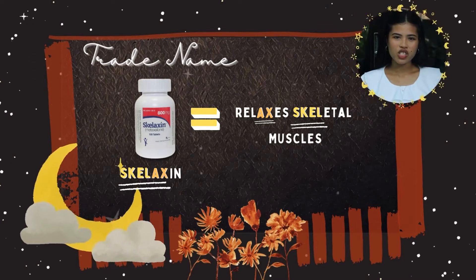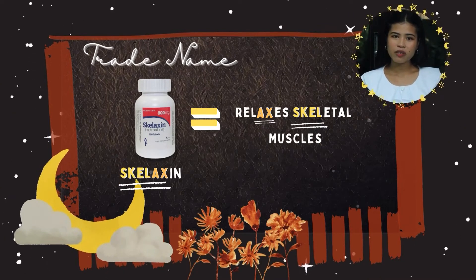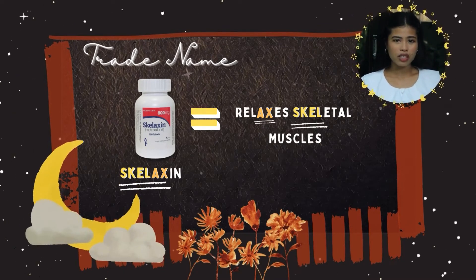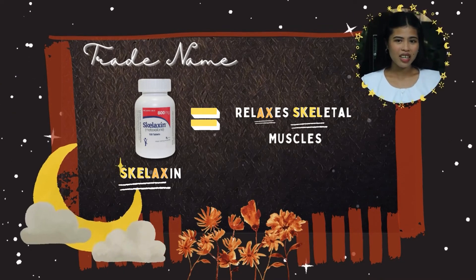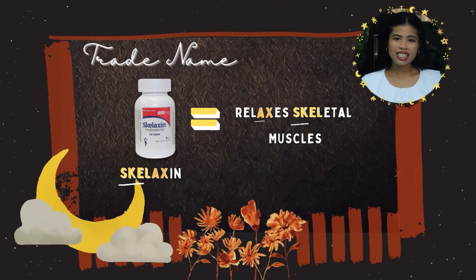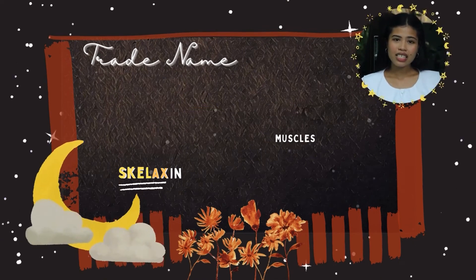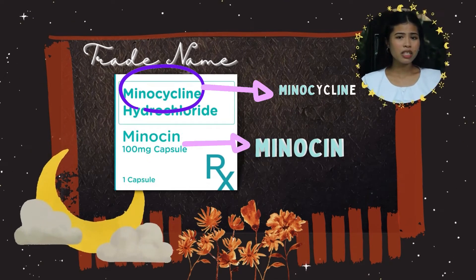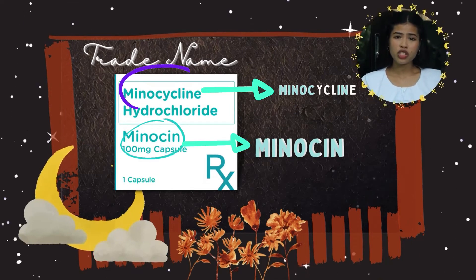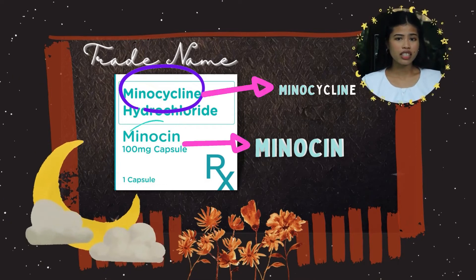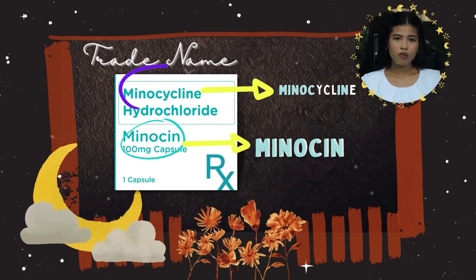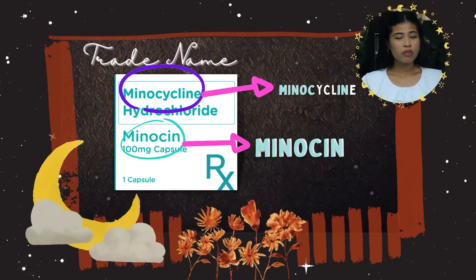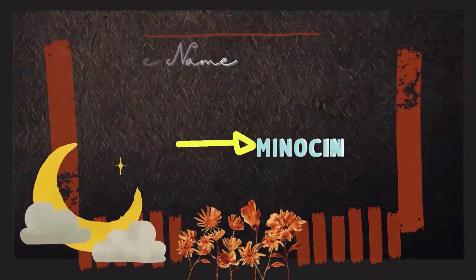Trade names often suggest a characteristic of the drug — for example, Skelaxin, which relaxes the skeletal muscles. Sometimes the trade name is simply a shortened version of the drug's generic name, for example, Menacin or monosylate.